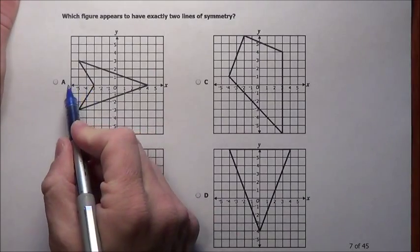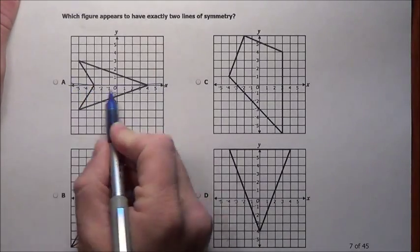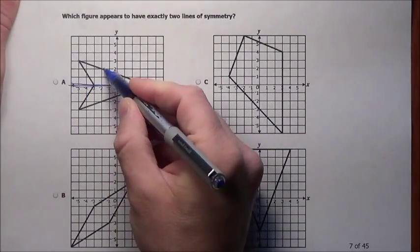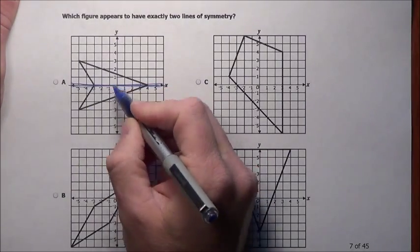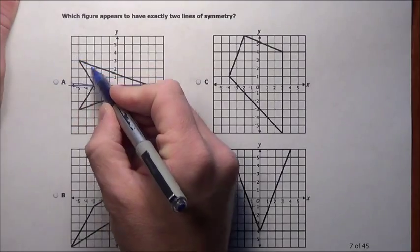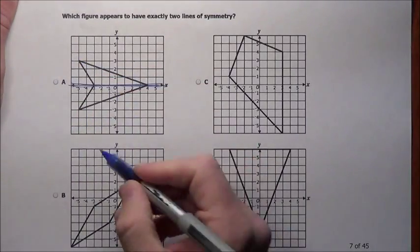When I'm looking at this A, I can see there's one right here. That part would land over there if I flipped across that line. I'm not seeing any others, there's no way I could draw it here because that would land over here. So A's out.